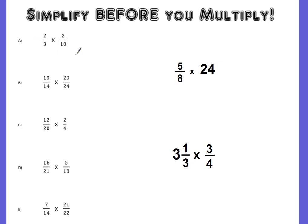So if this is our problem — 2 thirds times 2 tenths — we can actually do what we call cross simplifying before we do the actual multiplication. By cross, I mean diagonally. This 2 and this 10 have a common factor; they both are divisible by 2. So I'm going to divide both by 2. 2 divided by 2 is going to leave me a 1. 10 divided by 2 will leave me a 2.